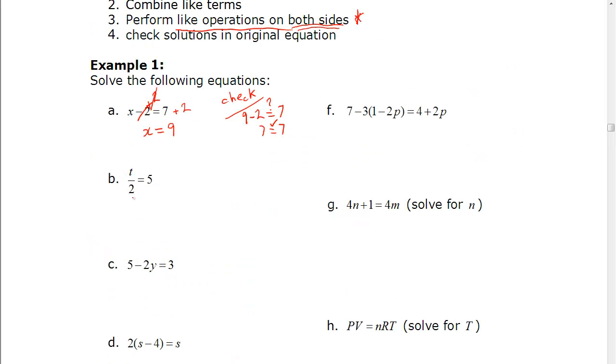For b, we have t divided by 2 equals 5. We want to know t. So in order to get rid of this 2, here it's division, so on the other side it's going to be multiplication. So t is going to equal 5 multiplied by 2, which is 10.